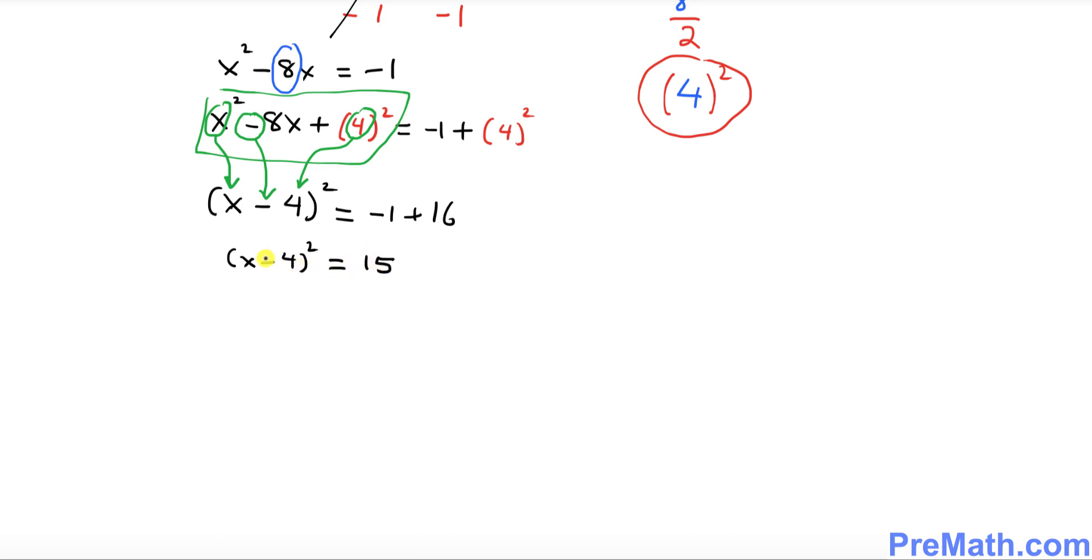Now we want to solve for x, so we must take the square root on both sides. So far so good. This square and square root undo each other.